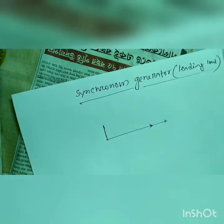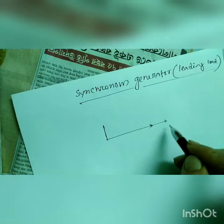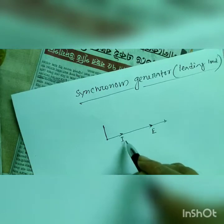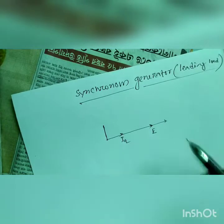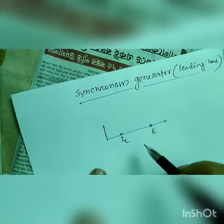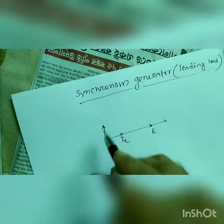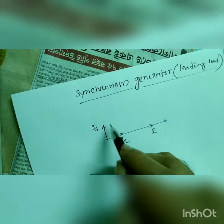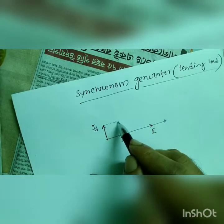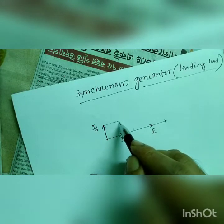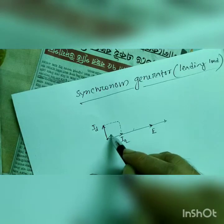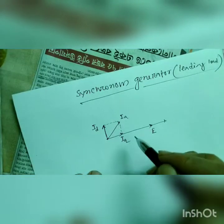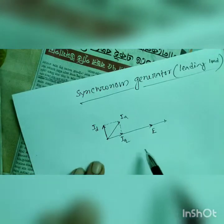As I have told you that E and IQ are always in phase. As the load current is leading in nature, so ID will be like that. That will be load current IA.